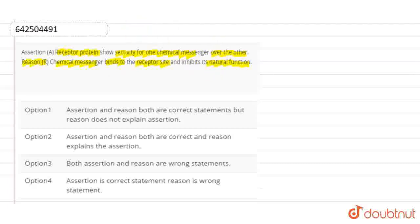Okay, so let's find out which one is correct here. It said, receptor proteins show selectivity for one chemical messenger over the other. So this assertion is correct here. Why? Because the binding sites have different shape, structure and amino acid compositions.